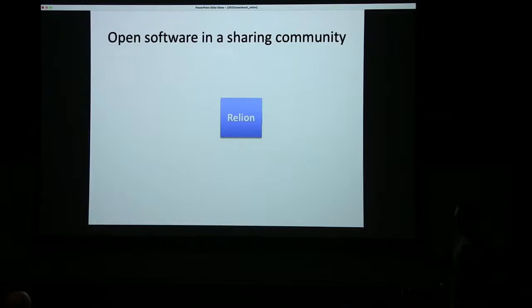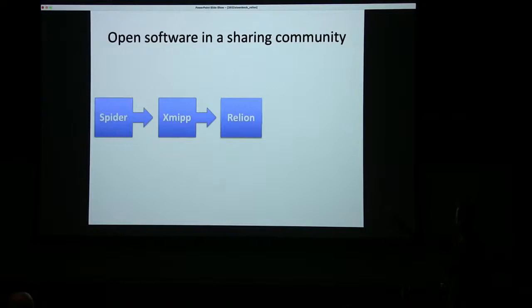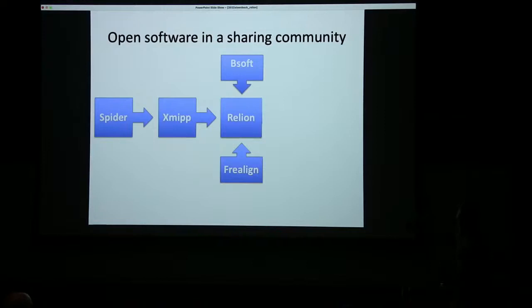RELION did not come out of the blue. I did my postdoc with Jose Maria Carazo, where I learned to program for cryo-EM. We did all our work in XMIPP, and RELION relied heavily on code written in XMIPP. Jose Maria did his postdoc with Joachim Frank and got lots of input from SPIDER, so XMIPP has a lot of influence from SPIDER. RELION used code from BSOFT — all kinds of libraries from Bernhard Hyman. I didn't use code from FREALIGN, but I did use some of the concepts and Fourier space reconstruction — so it was definitely influenced a lot by the code of FREALIGN.